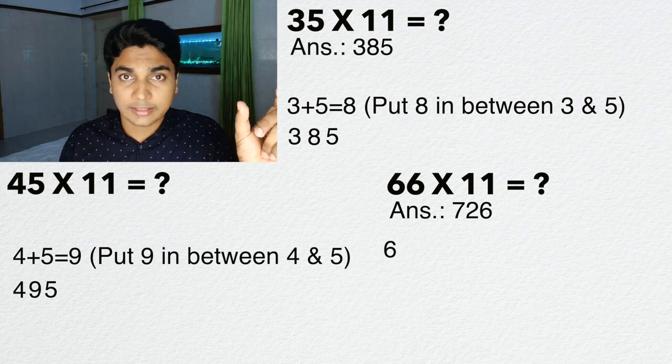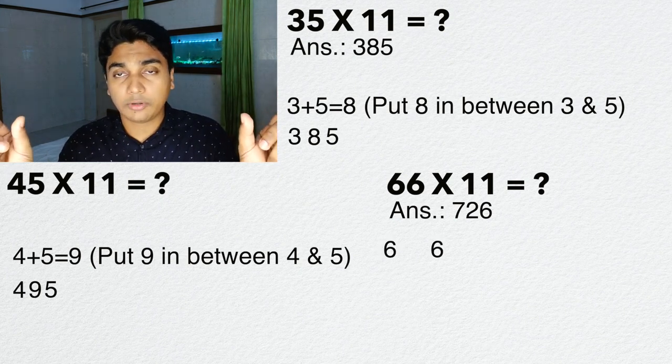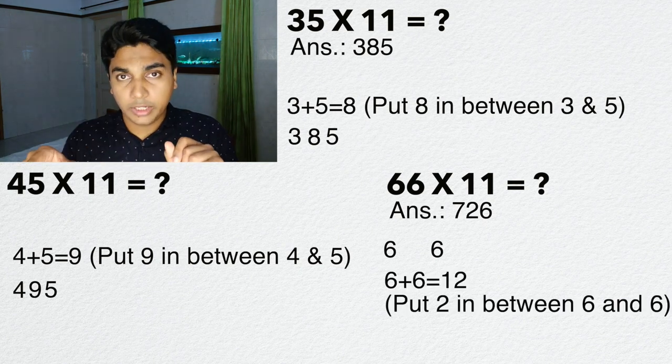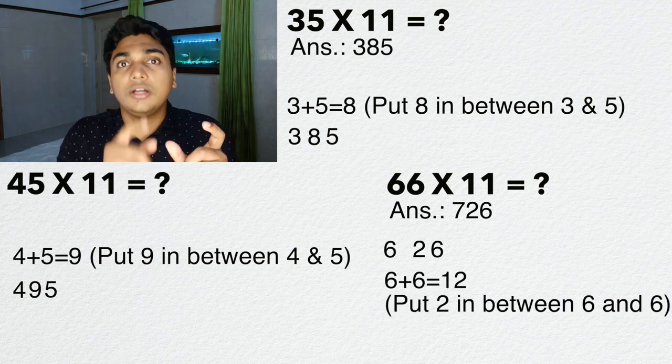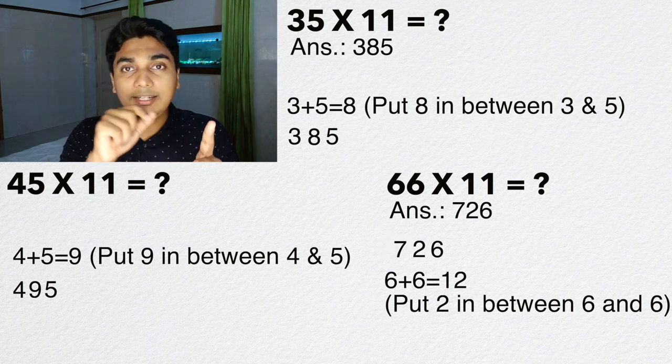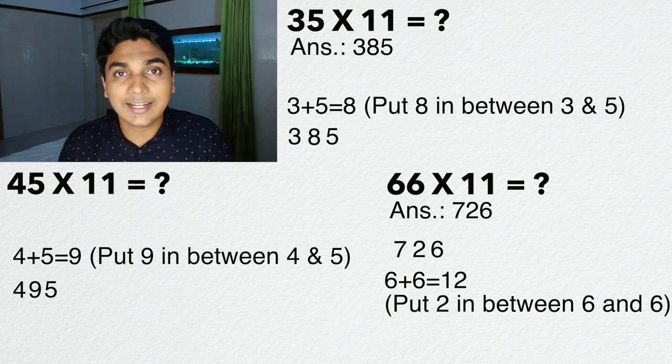How I got it? Let me explain it to you. Write 6 at the beginning, 6 at the last. Now what you have to do is add these two together, you get 12. Write that 2 in between and carry that 1 to the first number, that is 6. So you get 7. So 726.